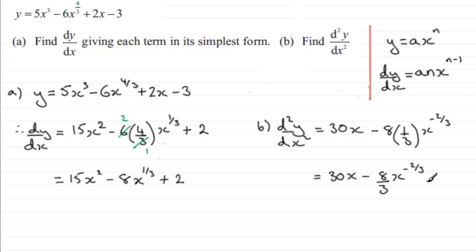It says give this in its simplest form, and that generally is reasonable. If you did want to take this further with this negative power, then you can write 30x minus 8 over 3, that's 8 thirds multiplied by 1 over x to the power 2 thirds. If you multiply 8 thirds by 1 over x to the power 2 thirds, you just get 8 over 3x to the power 2 thirds.